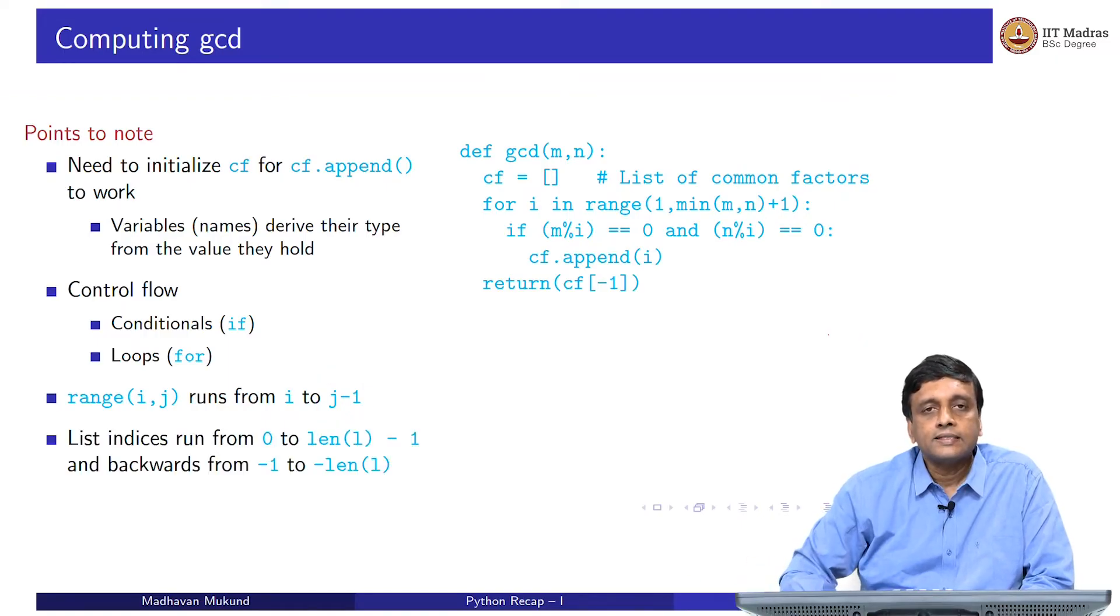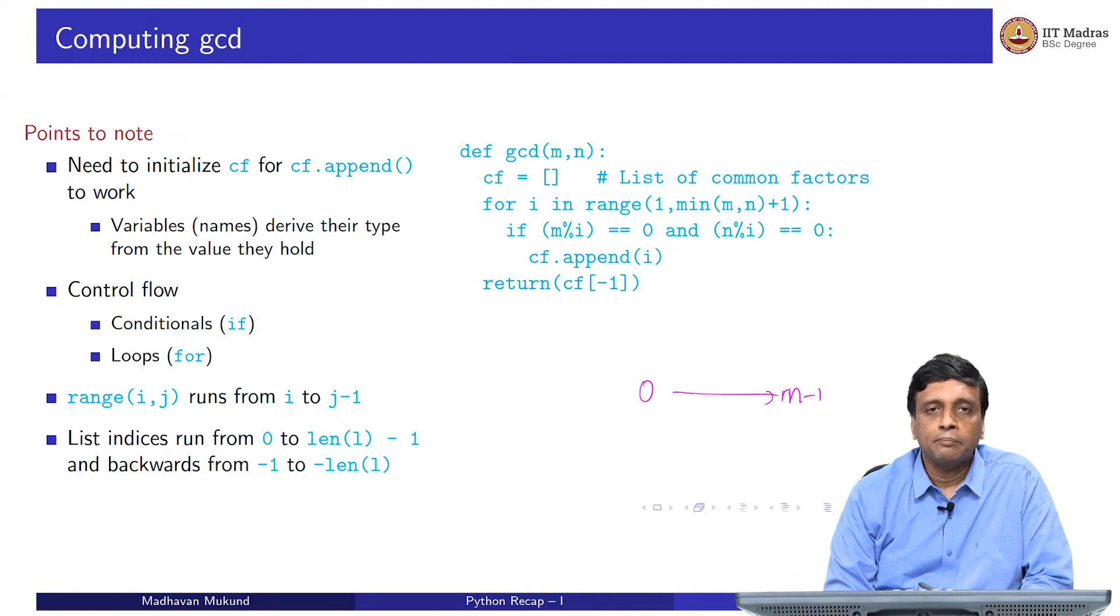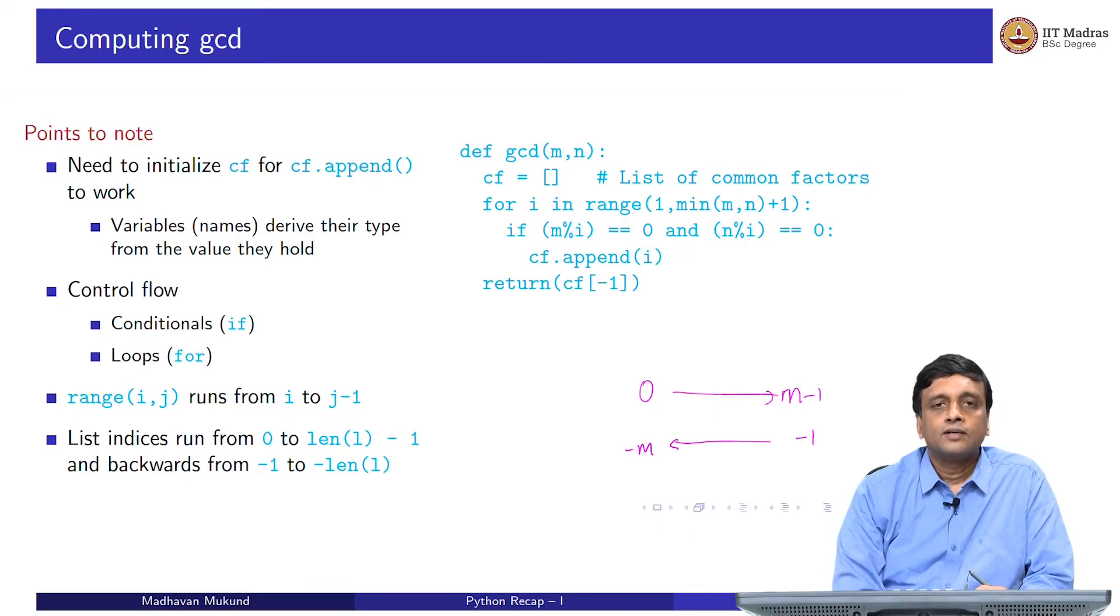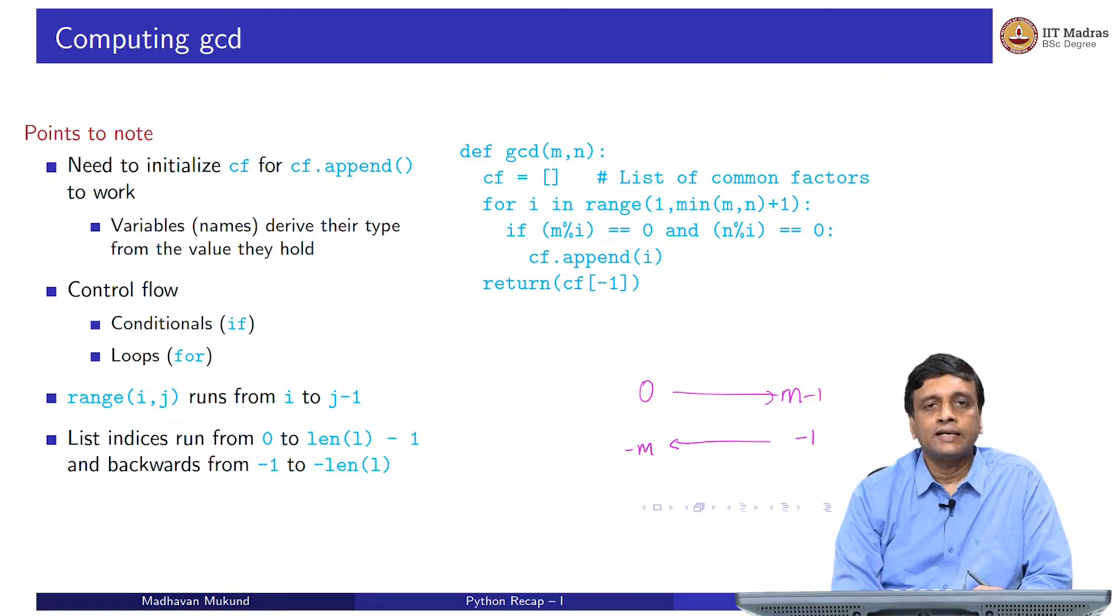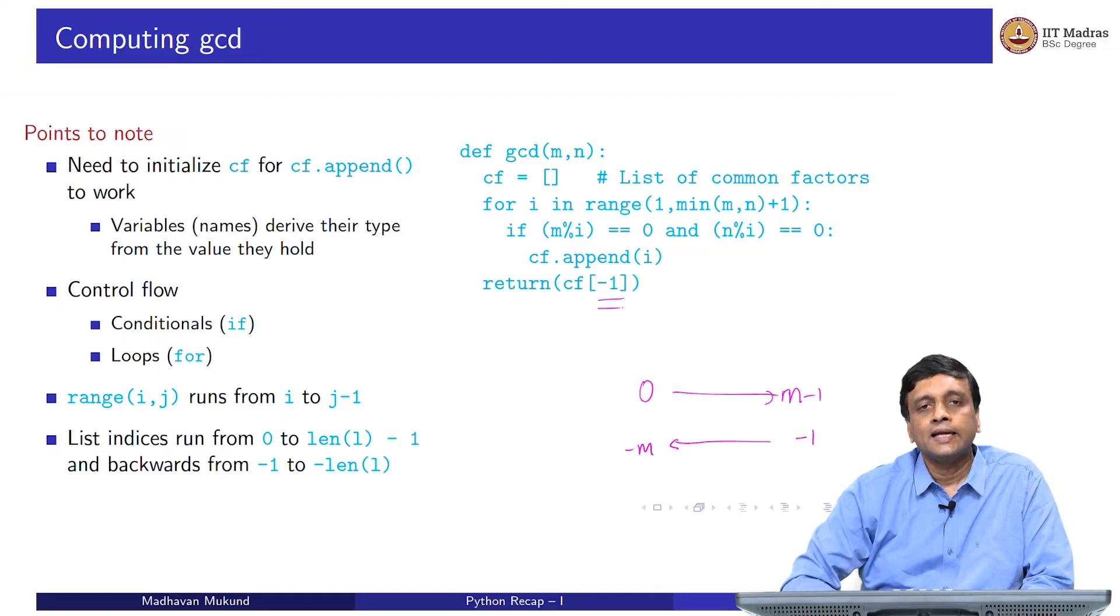The other thing is that lists are indexed starting from 0 as usual, but Python has this interesting option of counting backwards. You go forwards from 0 to m minus 1. Supposing the list is length m, then the indices run forwards from 0 to m minus 1, but they also run backwards from minus 1 to minus m. This way, it is much more convenient to talk about the last element of the list as having index minus 1, which is what we are doing here.